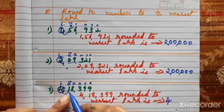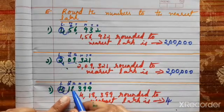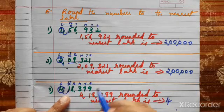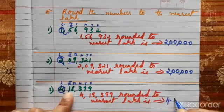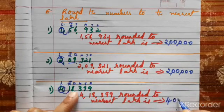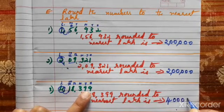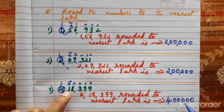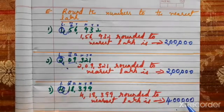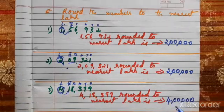Once the door is knocked, the digits after become poor — all become 0. So 1 is 0, 8 is 0 now, 3 is 0, 9 is 0, 9 is 0. So 4,18,399 rounded to nearest lakhs is 4 lakhs.